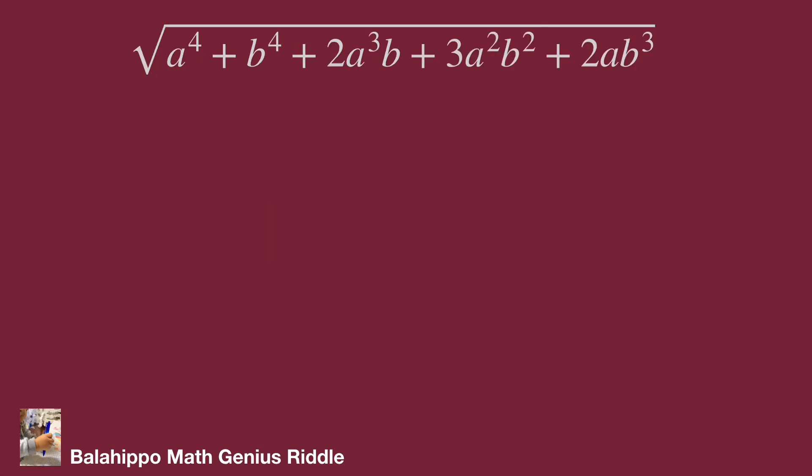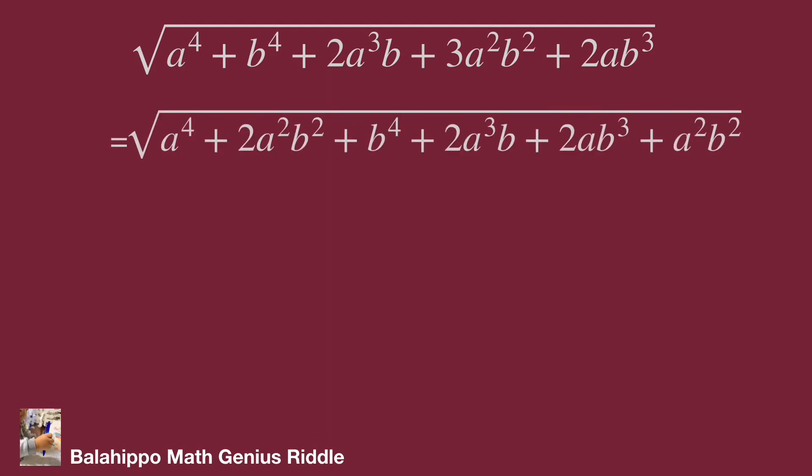In the new equations, there are a^4 + b^4. In the list, I try to make (a^2 + b^2) squared. Then I adjust 3a^2b^2 to 2a^2b^2 and 1a^2b^2. Put 2a^2b^2 into the a^4 + b^4 group.